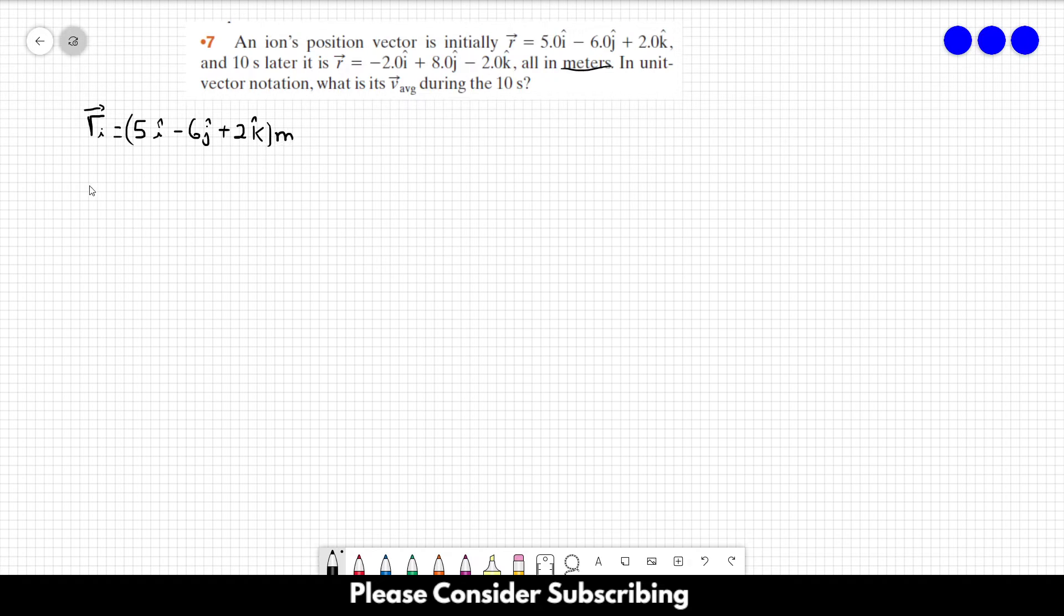And 10 seconds later, so delta T is equal to 10 seconds, the final position, Rf, is equal to minus 2 in the I direction, plus 8 in the J direction, minus 2 in the K direction, in meters.